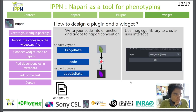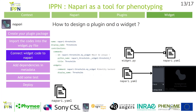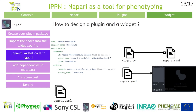Once you have created your package, you need to find the widget.py file and integrate your code into a function, adapting the inputs and outputs to the Napari convention. For the user interface, simply use the MagicGUI library to make the widget visible from the Napari window. Once you have integrated your code into a function in the widget.py file, you need to connect this function to the napari.yml manifest.